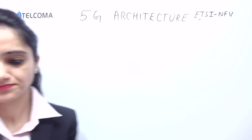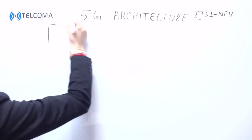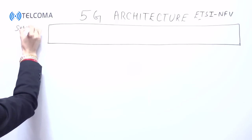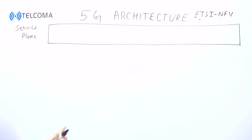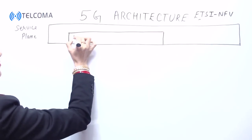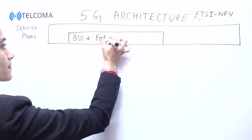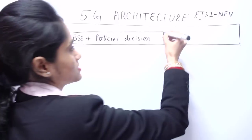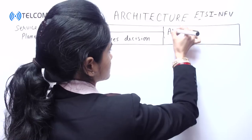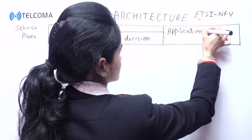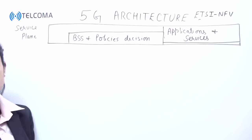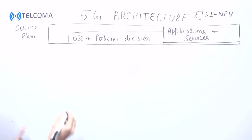The very first plane is the service plane. In the service plane we are having BSS and policies decision. We also have applications and services. These are connected to the next plane, which is our management and orchestration plane.